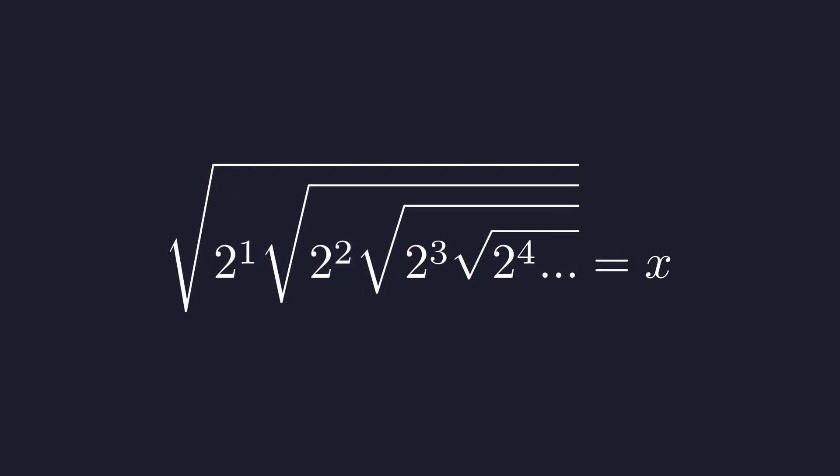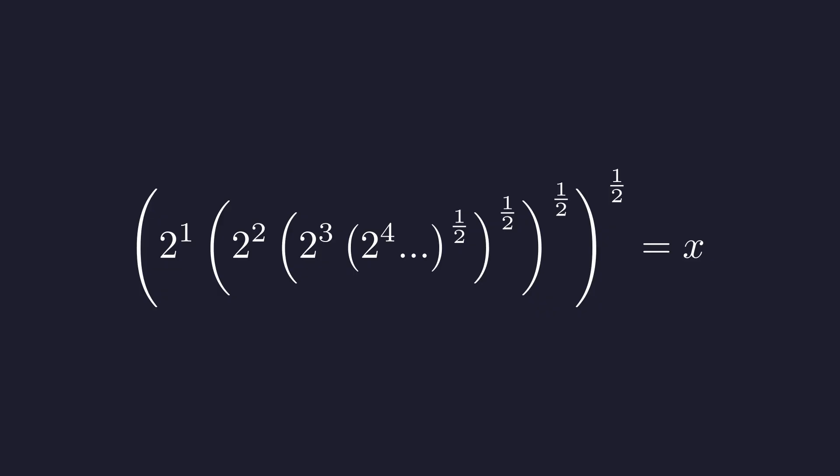2 to the first, 2 squared, 2 cubed, and so on. Now remember that a square root is the same as raising to the power of one-half. Writing it this way makes the structure clearer.